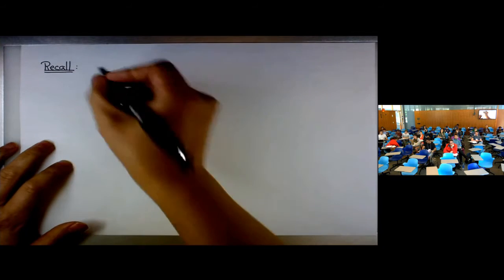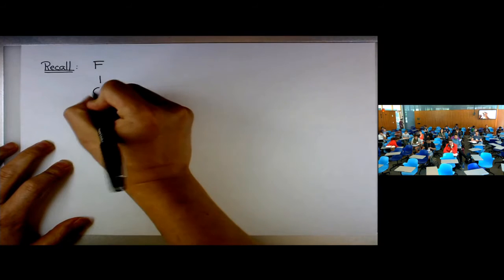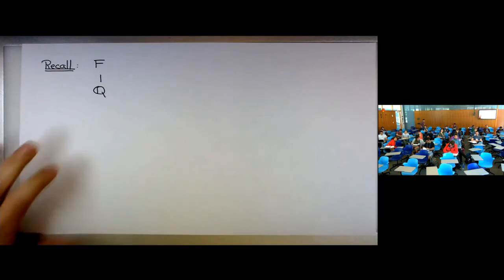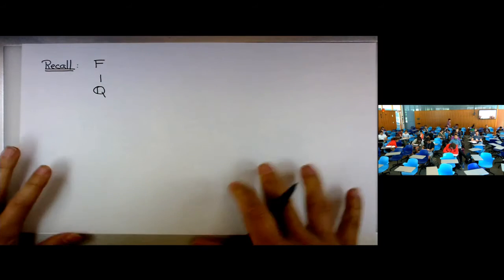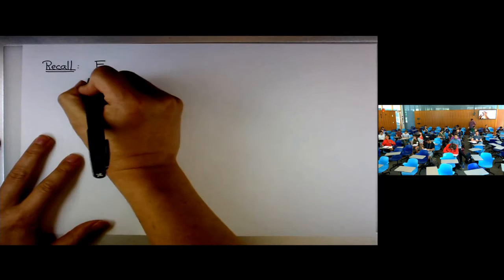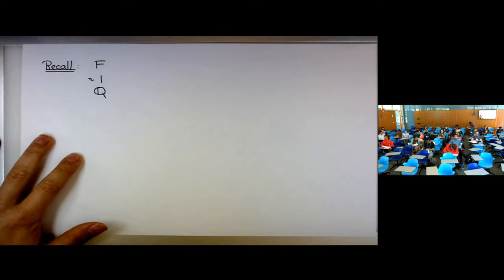Welcome to the second talk on algebraic number theory. Let's start by recalling what we talked about last time. I'll be working with a number field F, which is a finite extension field of degree n.